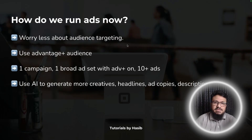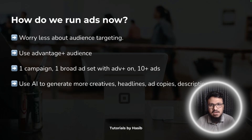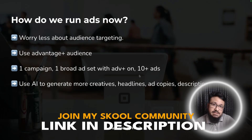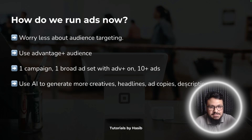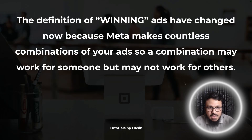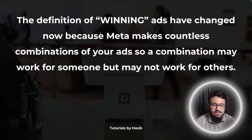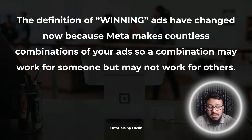This is the difference between the old method and the new method because of Andromeda. Previously, once you found the right audience you'd run three ads per ad set. Now it's the opposite — you need 10 or more ads. Use AI tools like ChatGPT, Claude, or Gemini to generate more creatives, headlines, ad copies, and descriptions. The definition of a winning ad has also changed — previously it was the ad with the lowest cost per result, highest reach, impressions, and CTR.